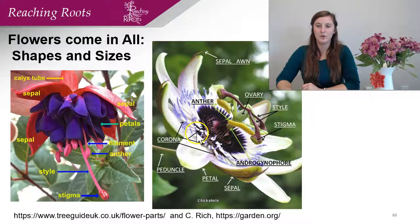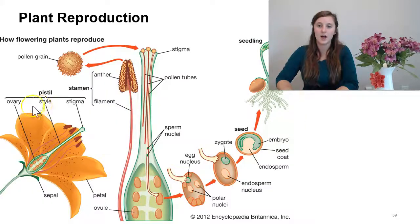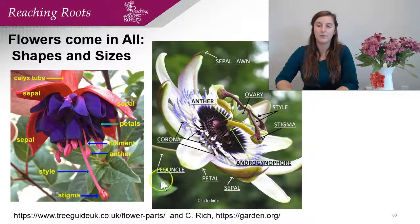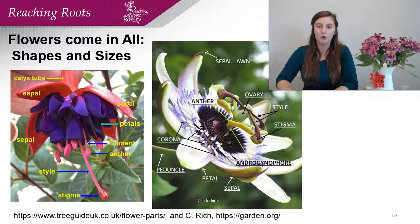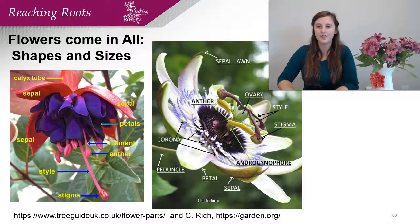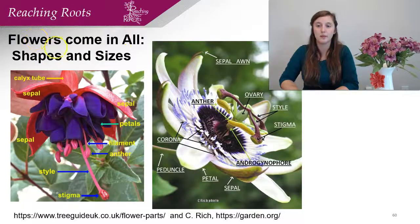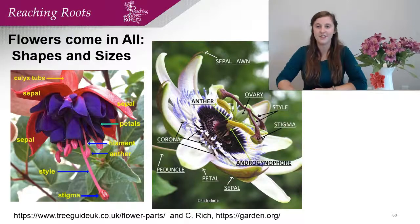We went through the easiest example to identify the different parts because they're usually larger on a lily plant. But all different plants have different flower shapes, sizes, and colors. If you look carefully with a trained eye, you can find all the parts we discussed on these different flowers — they're just in different configuration and organization.